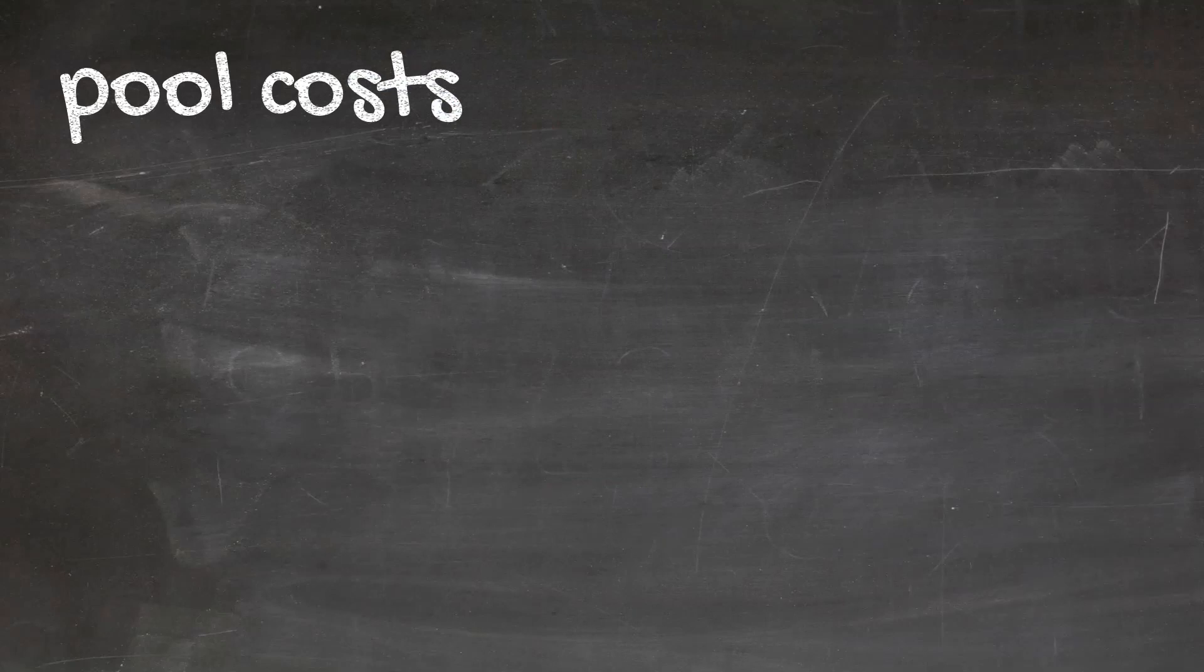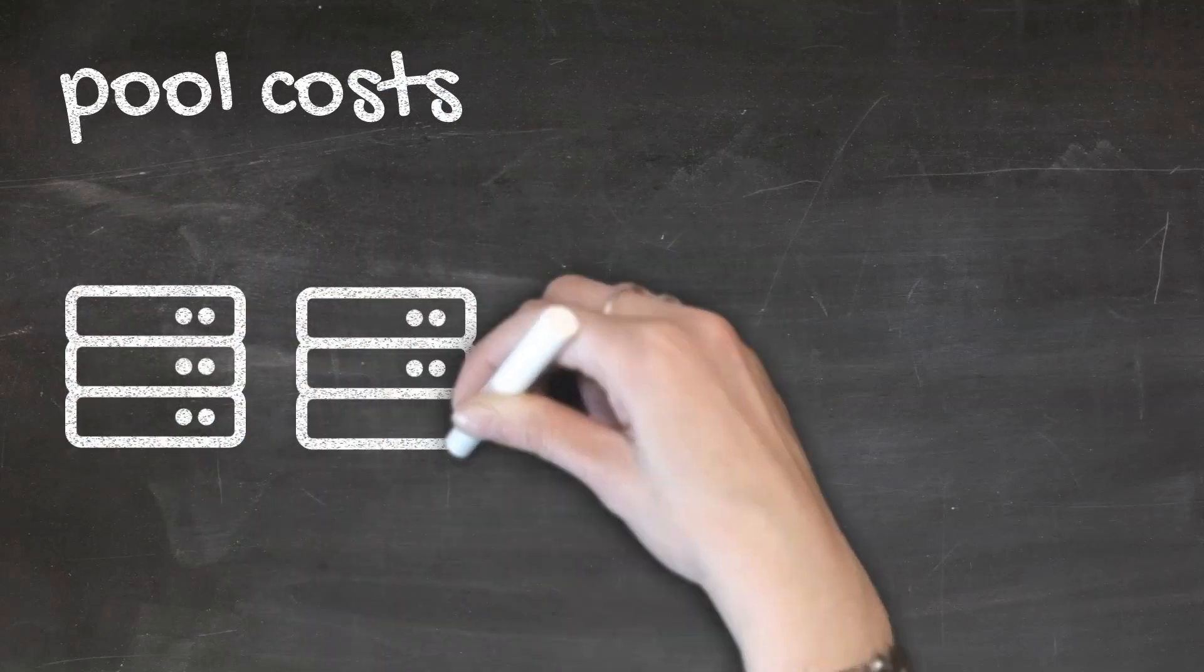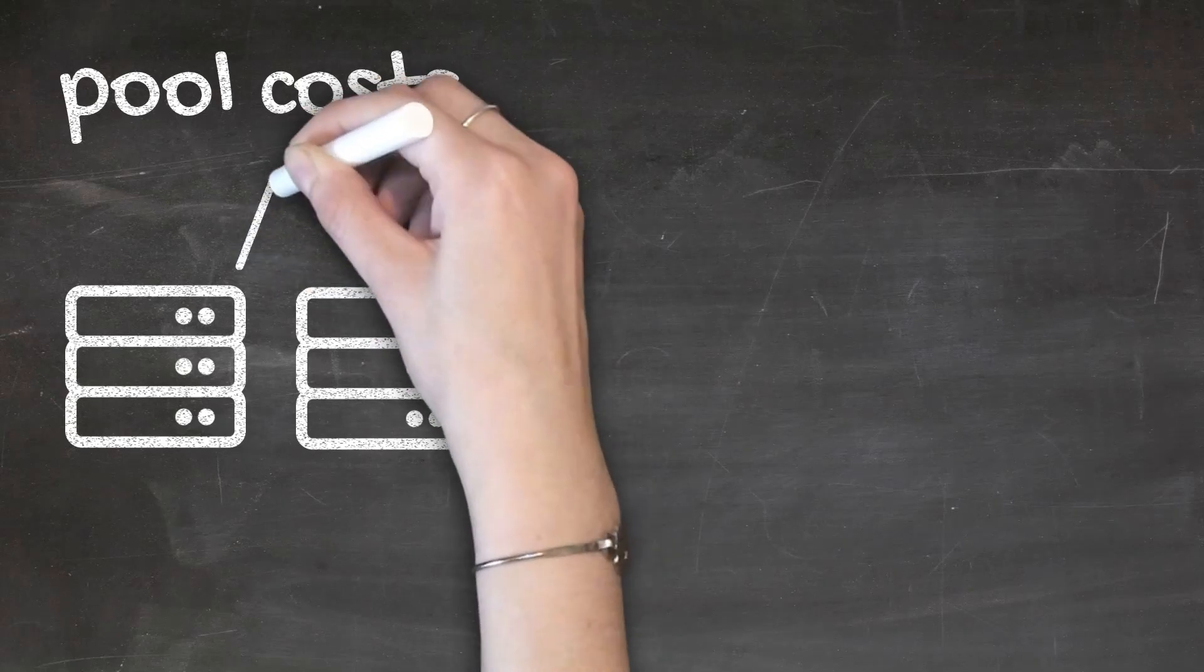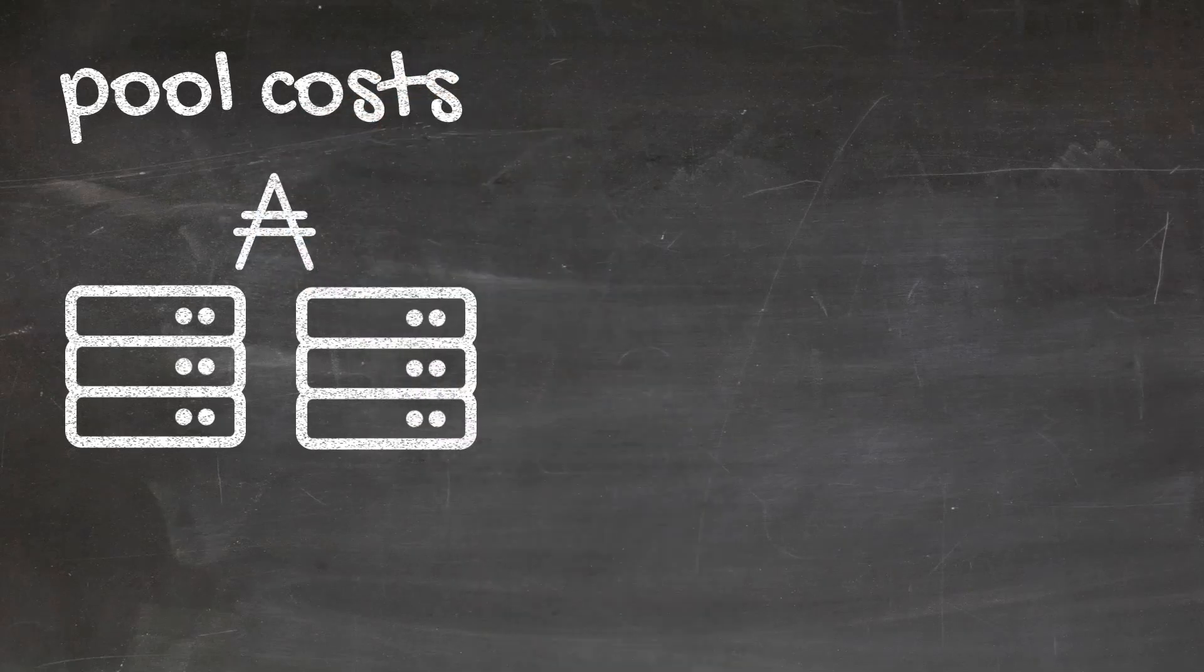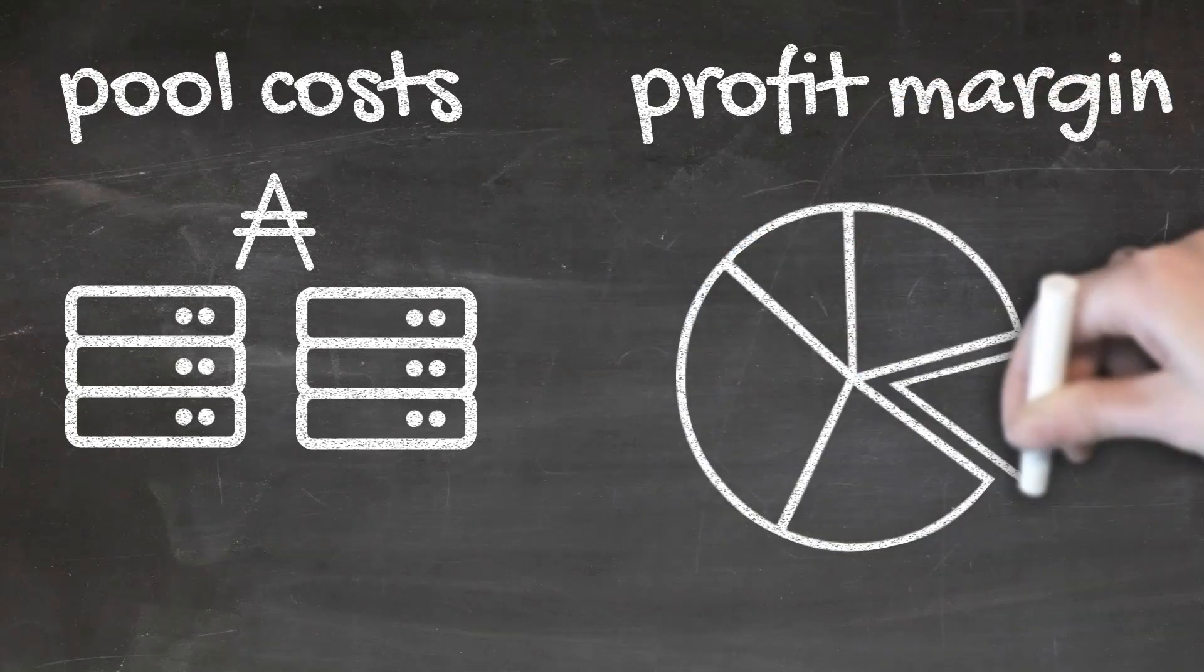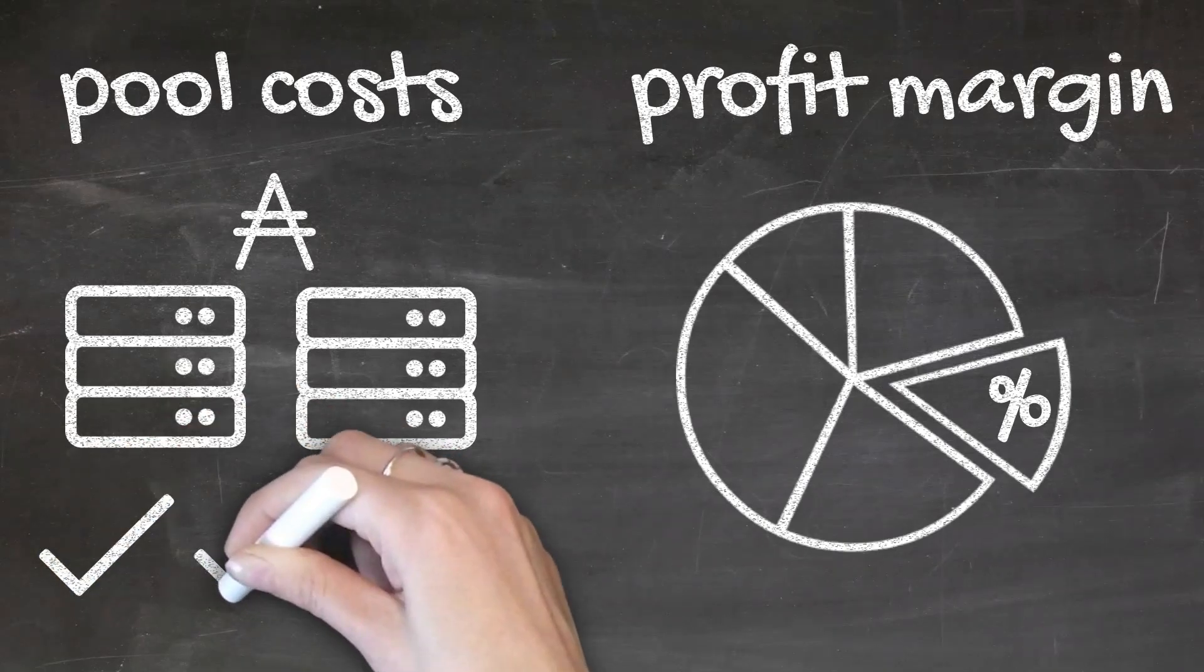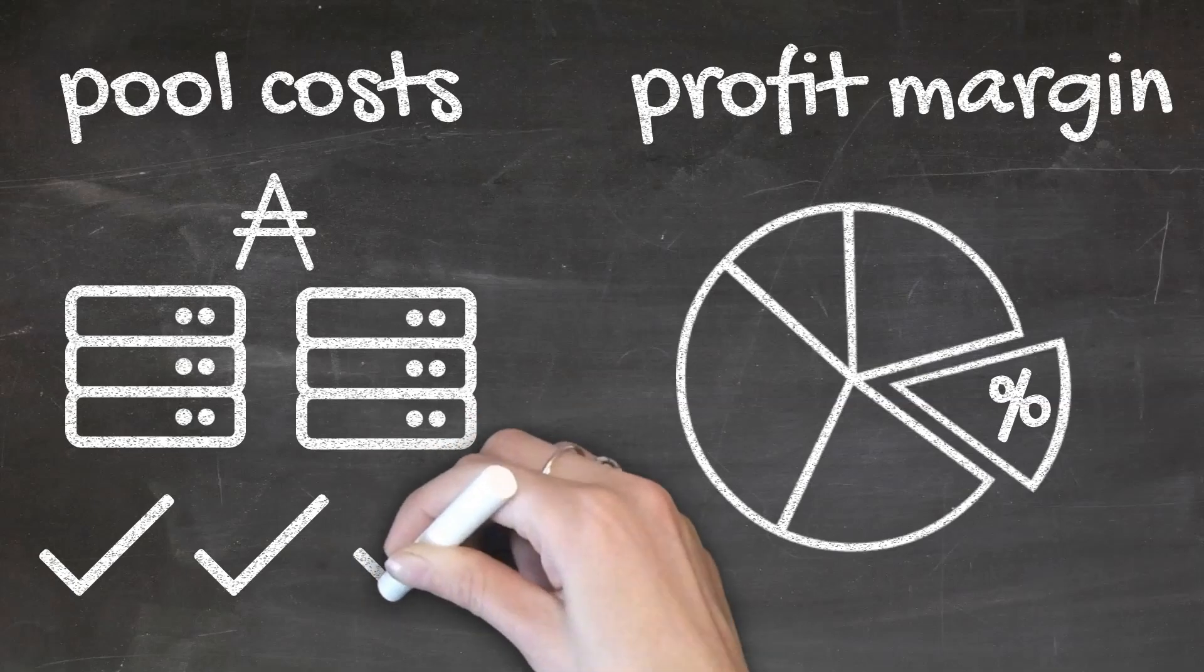Pool Costs: Pool operators declare their costs for running the hardware per epoch in ADA. Profit margin: In addition to that, they can choose a profit margin by percentage. This margin is their incentive to keep the infrastructure reliable, up-to-date, and secure.